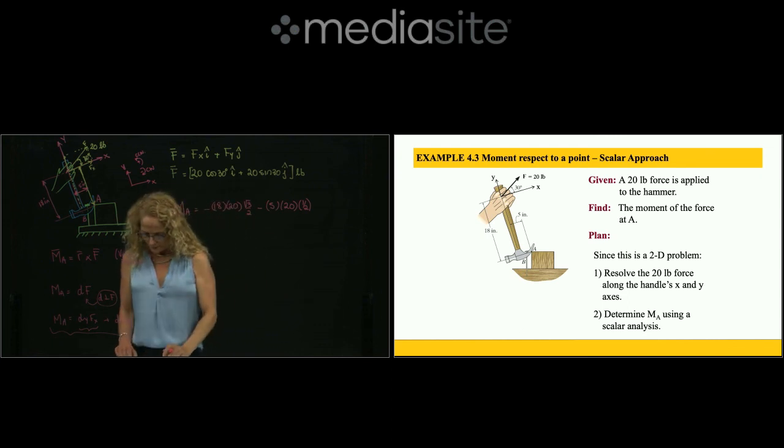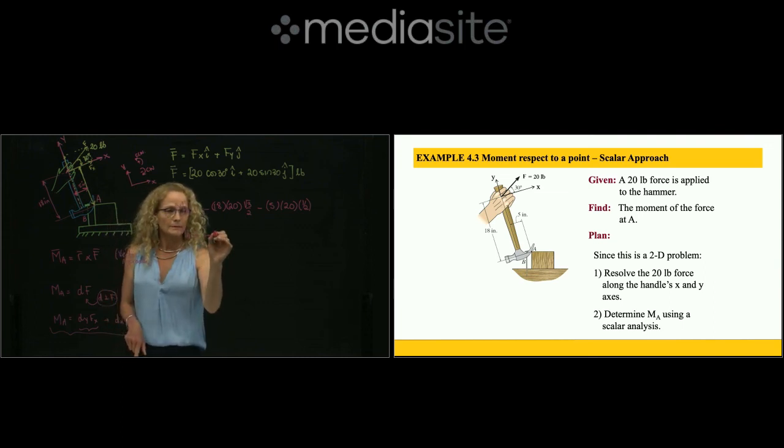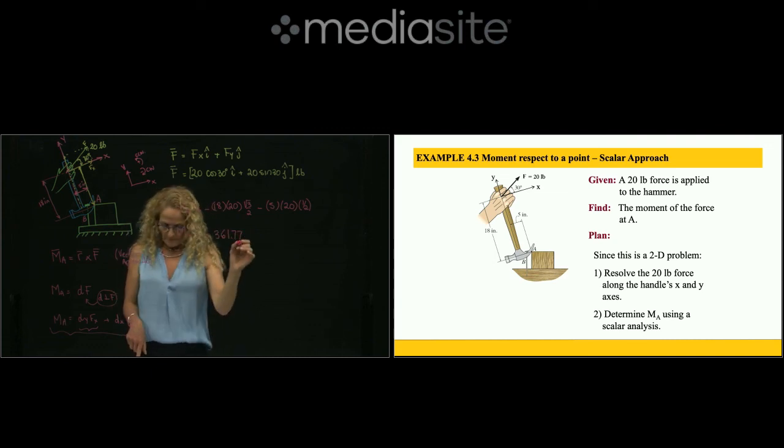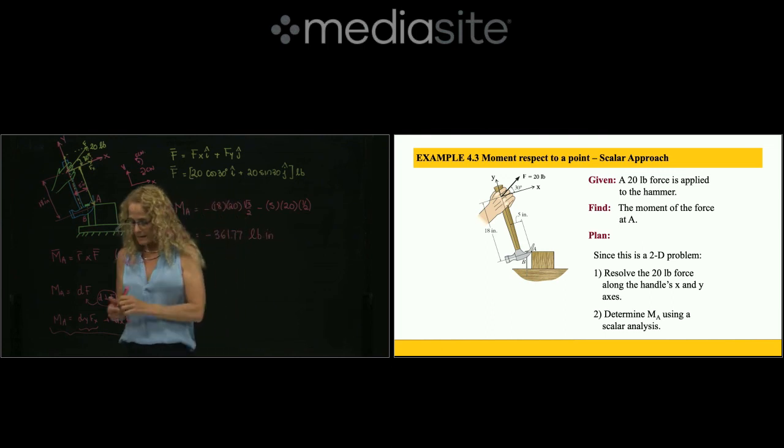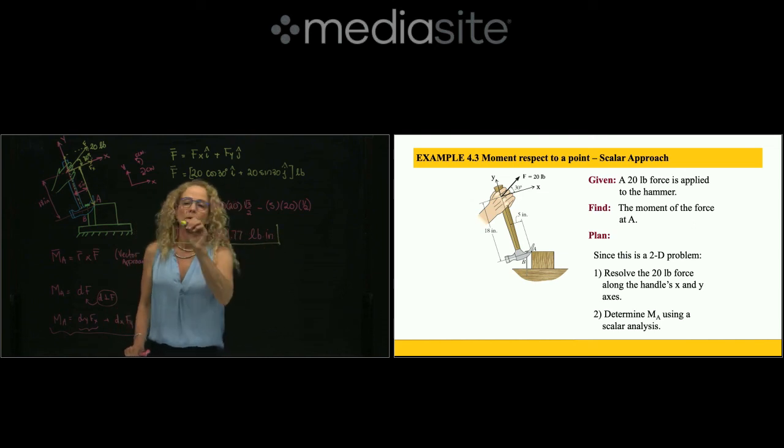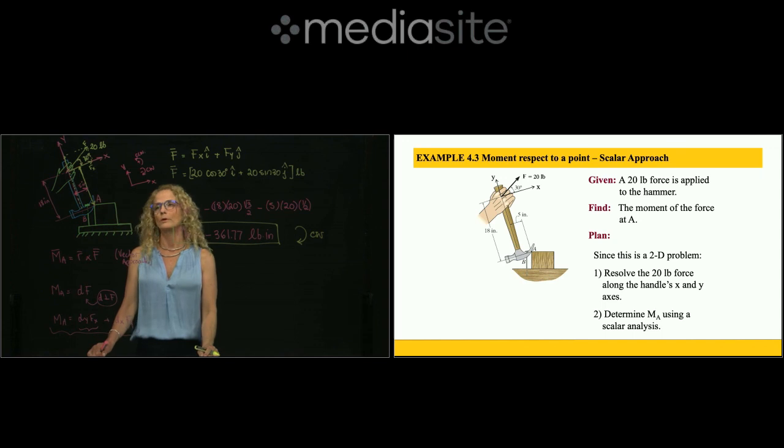And now if I multiply those numbers and add them together, I get that the moment is negative 361.77 pounds per inch. And as I said, this sign means that the moment is clockwise. And this is the solution of this problem.